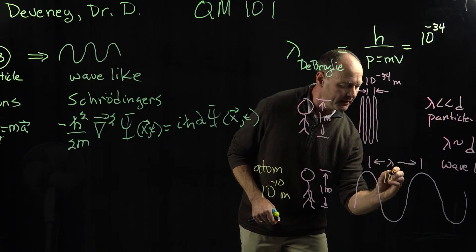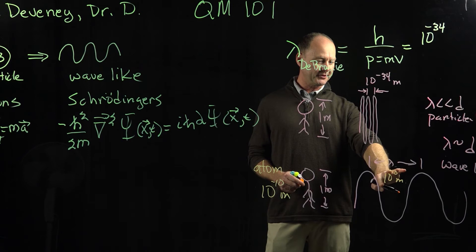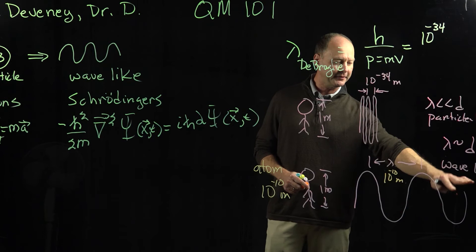About 10 to the minus 10 meters. Then the size of the atom is basically the size of the wavelength of the electron. So the atom feels the electron and it feels it more as a wave.